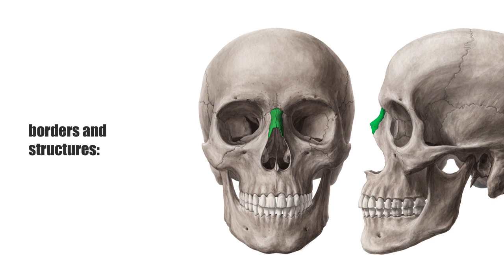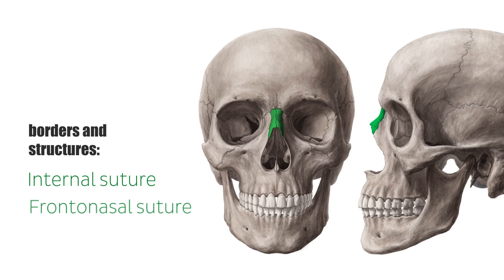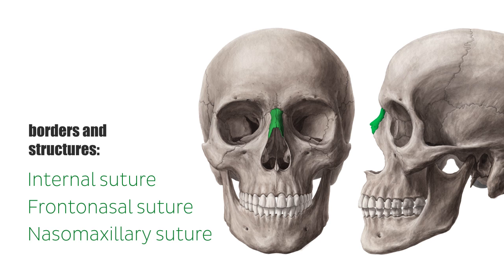It is bordered medially by its pair and they are separated by the internal suture. The nasal bone borders the nasal part of the frontal bone superiorly and is separated by the frontonasal suture. Laterally, it is bordered by the frontal process of the maxilla by the nasomaxillary suture.